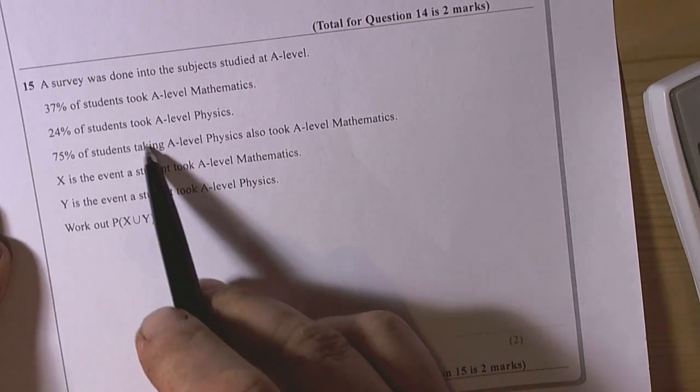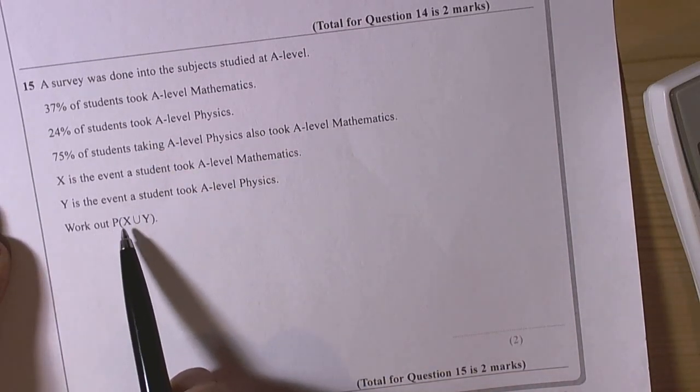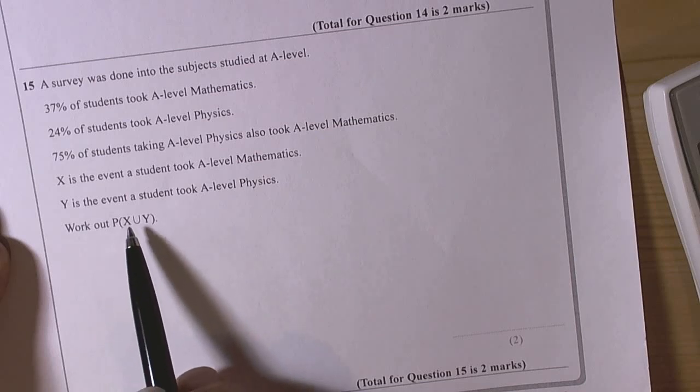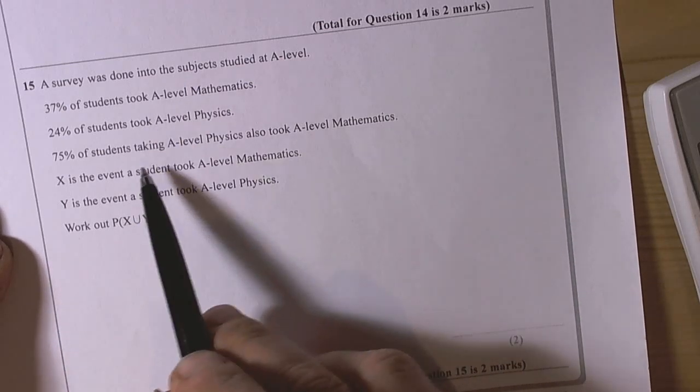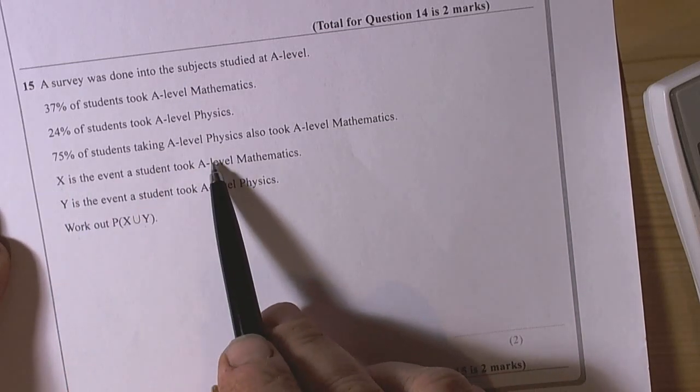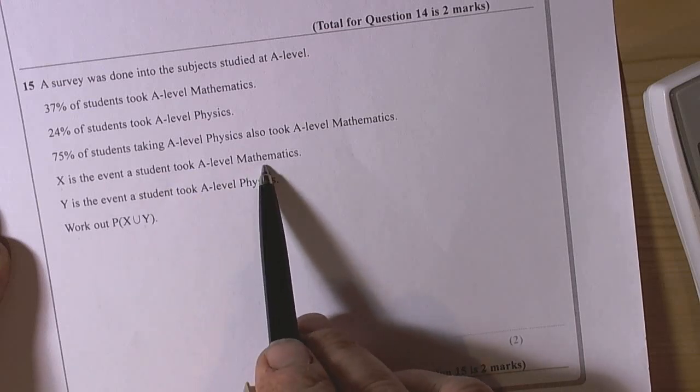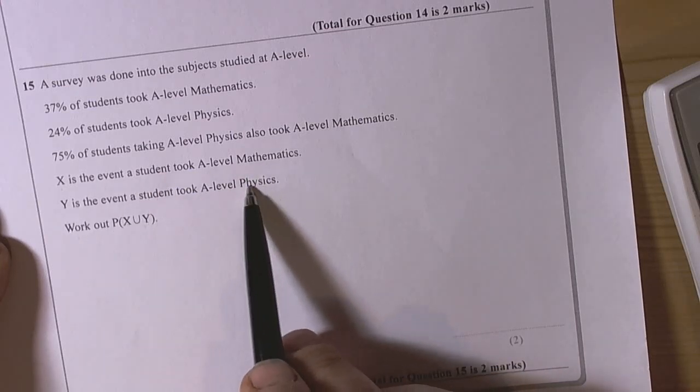OK, so a question here that's asking us to work out the probability of the union between the x variable and the y variable. So let's have a look at what they're talking about. X is the event that the student took maths and Y is the event they took physics.